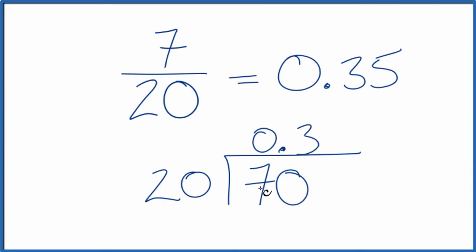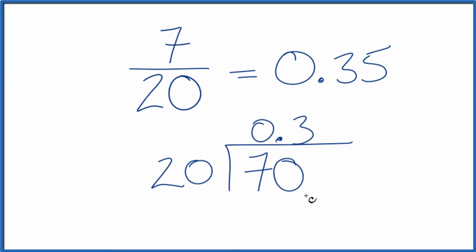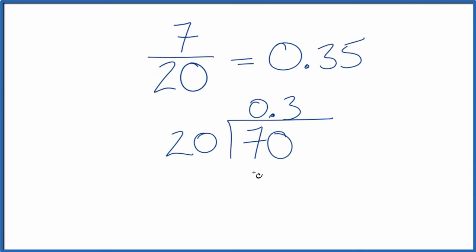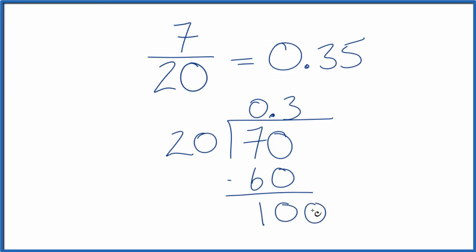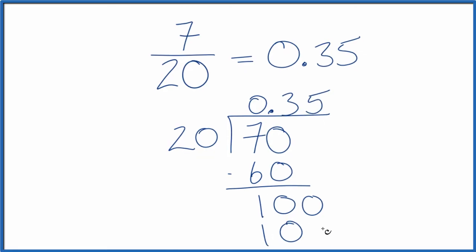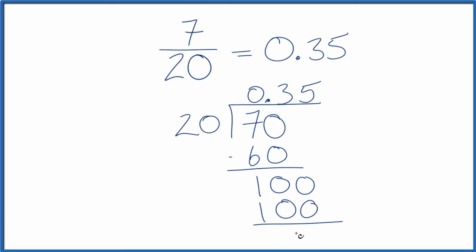Now, 3 times 20 would give us 60. Subtract — that gives us 10 left over. It doesn't go into 10, but it does go into 100, so we can move over a decimal place. 5 times 20 is 100, with no remainder.